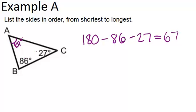Now, the smallest side of a triangle will be across from the smallest angle. The smallest angle is the 27 degree angle. So, that means the smallest side is across from it, and it is side AB. So, the shortest side is AB.